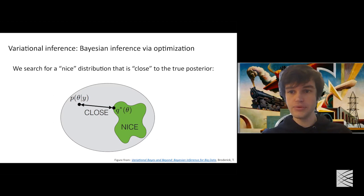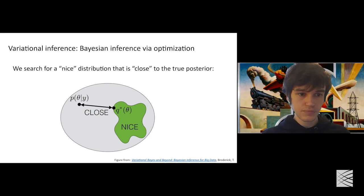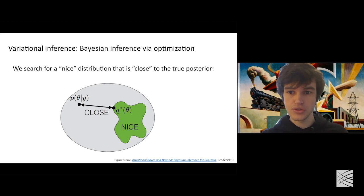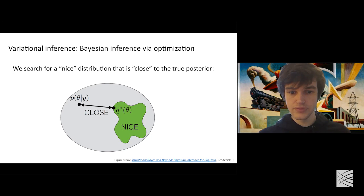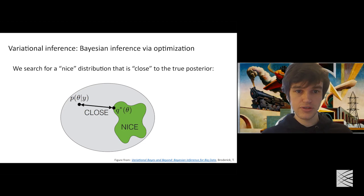I haven't talked at all about how we go about computing these distributions — the posterior distribution or the posterior predictive distribution needed for Bayesian analyses. There are lots of ways to do that. Sometimes you can do it exactly by hand. You may have also heard of Markov chain Monte Carlo, or MCMC, which is a very popular approach. But for the rest of this talk, I'm going to focus on a different set of algorithms collectively known as variational inference, which converts Bayesian inference into an optimization problem.